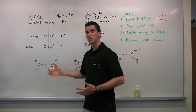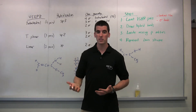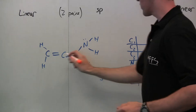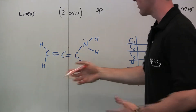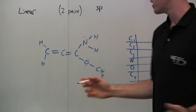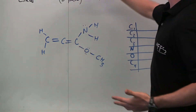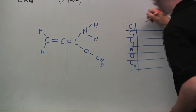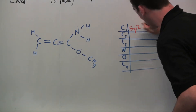VSEPR pairs are either non-binding electrons that are localized or they are sigma bonds. Starting with the first carbon, we see there are three sigma bonds and no localized non-binding electrons. Since there are three VSEPR pairs, that correlates to an SP2 hybridization, so carbon 1 is SP2.